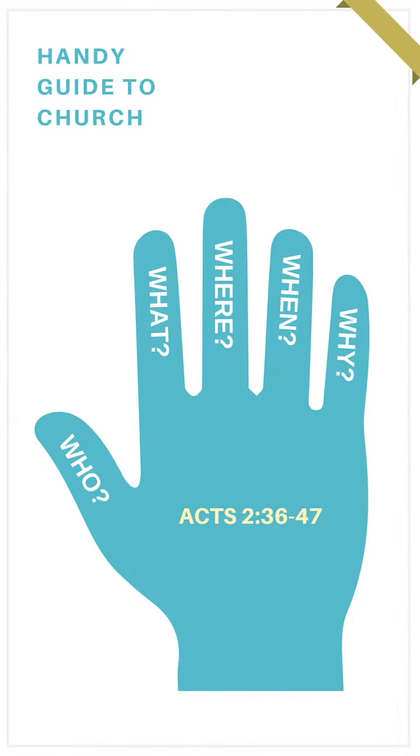First, who is the church? Simply, we learn from this passage that the church are those who turn from the ways of the world, believe in this Christ, and become baptized as an entry point — demonstrating they are called out from the world and part of this new way of life in the practicing, learning community that is the church. Three thousand are added that day and a new church is formed. Who? It's those who come out from the world and are brought into this new way of life.